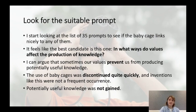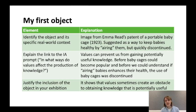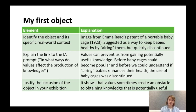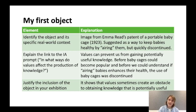This illustrates the idea that our values — such as caring about our babies — can sometimes prevent potentially useful knowledge from being gained. So I decided to use that as my IA prompt and the baby cage as my first object. The first object will be an image from Emma Reed's patent of a portable baby cage. The context is that baby cages were suggested as a way to keep babies healthy by airing them, but this practice was quickly discontinued due to hard feelings produced in a lot of parents. The link to the prompt: values can prevent us from gaining potentially useful knowledge — before baby cages could become popular and before we could understand if airing babies enhances health, the practice was discontinued, so we never got to know.